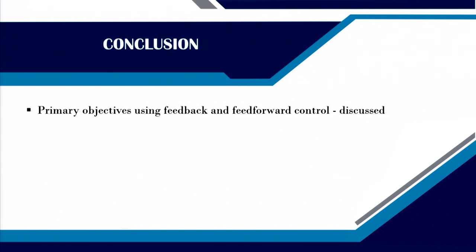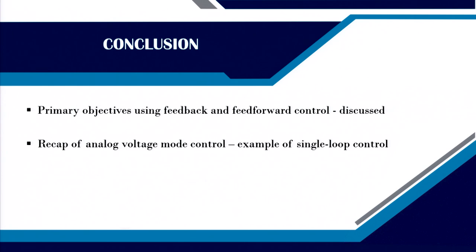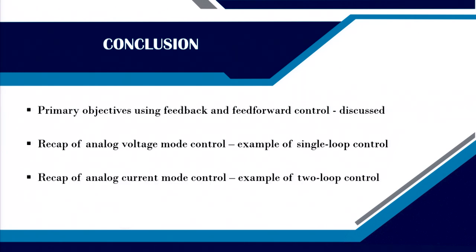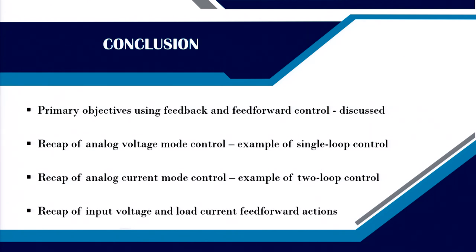In summary, we have summarized the primary objectives using feedback and feed forward control. We recapitulated analog voltage mode control as an example of single loop control. We discussed current mode control as a two-loop control example. We recapitulated input voltage and load current feed forward actions. In subsequent lectures we will slowly digitize this analog loop and examine the number of ADC and DAC requirements. This is the first step towards digital control, and the method of digitization will be discussed in the subsequent lecture. Thank you very much.